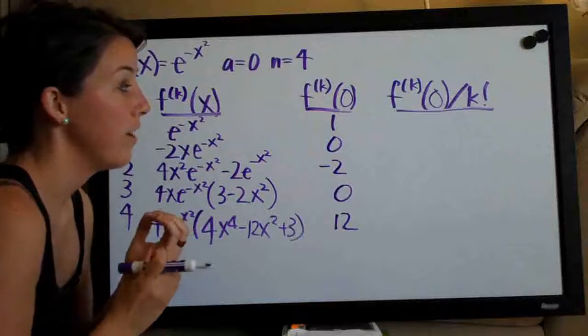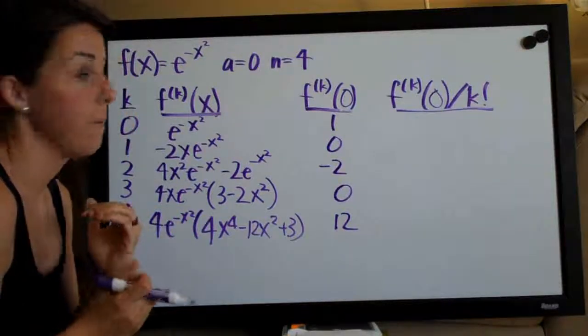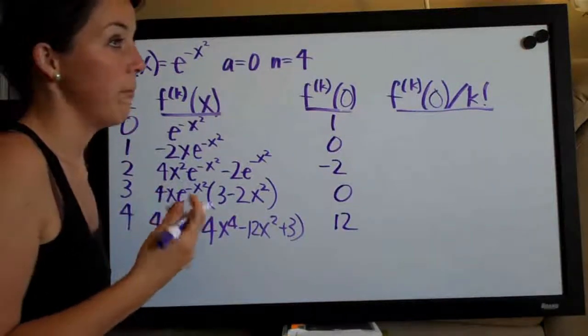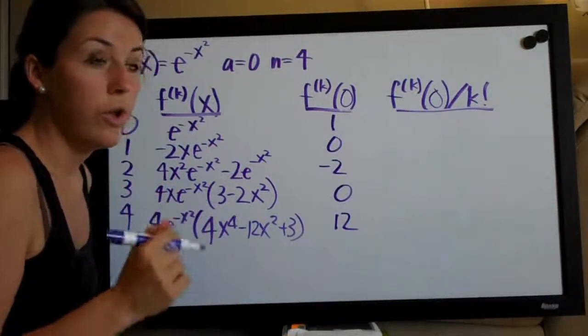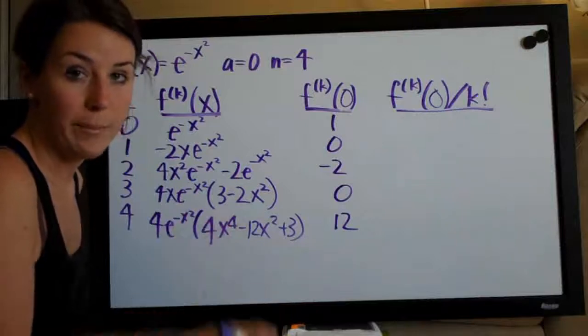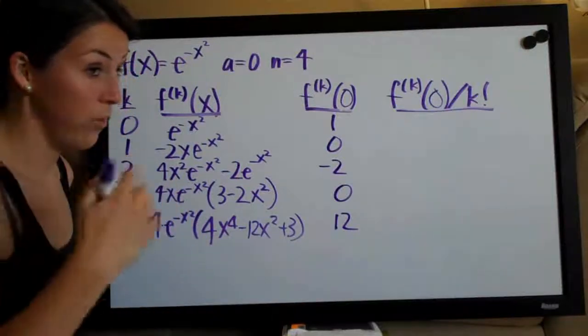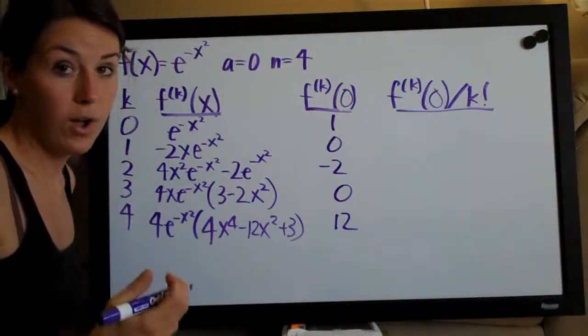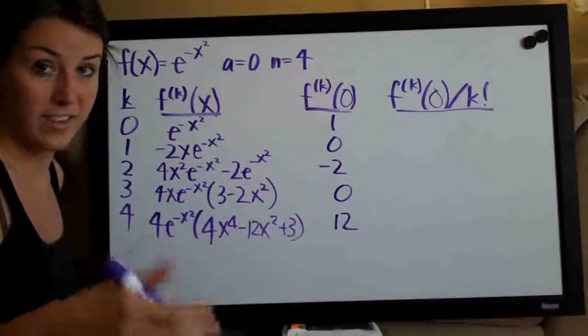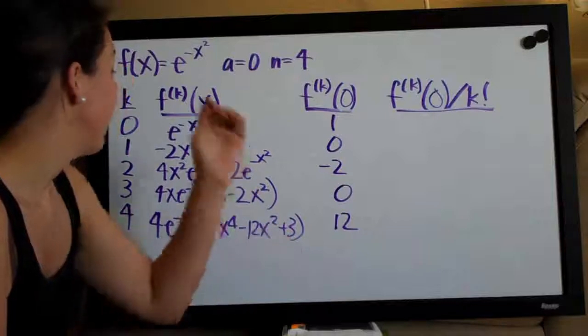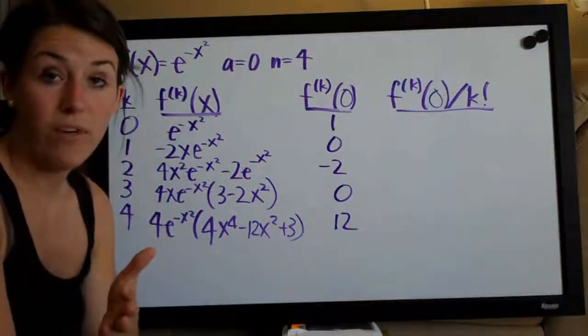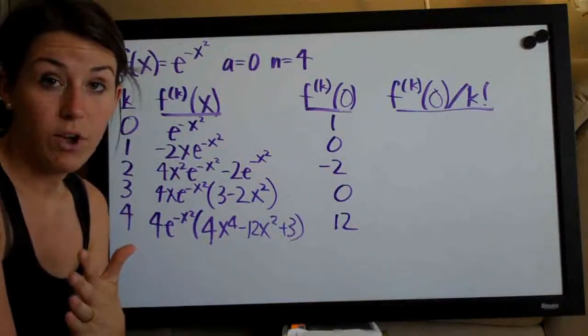If you're not familiar with factorial, it's really simple. Basically, if you have four factorial, four factorial is equal to four times three times two times one. You go all the way down to one. So, twelve factorial would be twelve times eleven times ten times nine, eight, seven, six, five, four, three, two, one. That would be twelve factorial. And zero factorial is one, always.